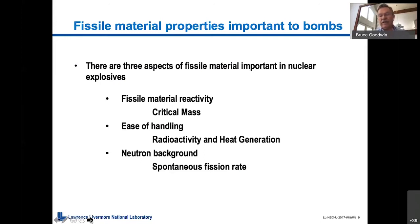The radioactivity and the heat that these radioactive materials generate, which determines how easy it is to handle these materials. And finally, the neutron background, which is the material just sitting on the table will spontaneously fission at a slow rate, and so that produces neutrons, so it causes you to have a background of neutrons that you have to deal with. Next view graph.